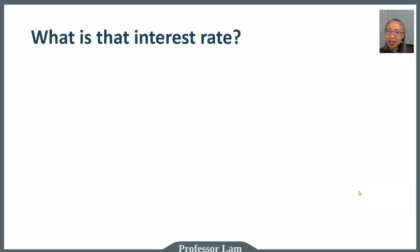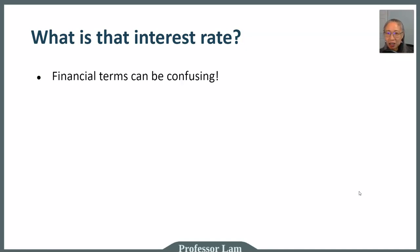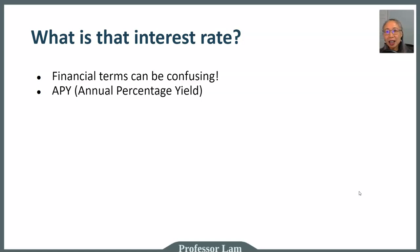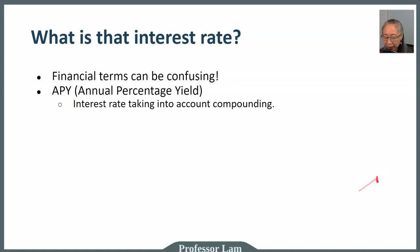We all understand interest, but when we look at a financial contract, a loan contract, or a credit card application, there are so many different terms — what do they really mean? First, let's look at a couple of very common ones. One is APY, which stands for annual percentage yield. The APY is an interest rate that takes into account compounding.